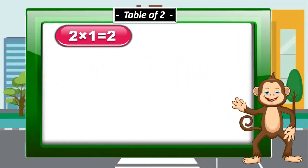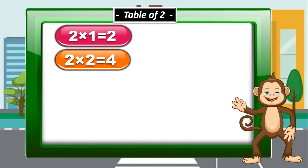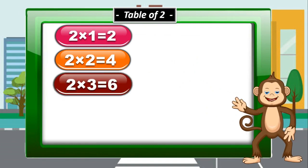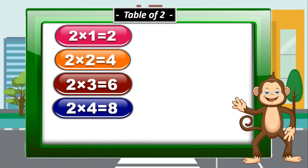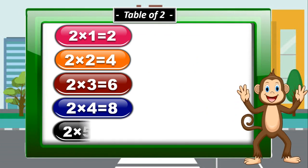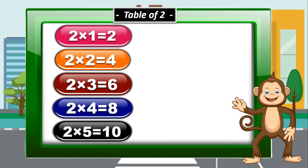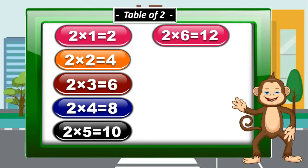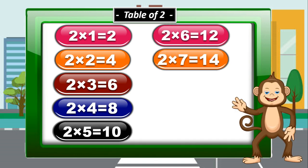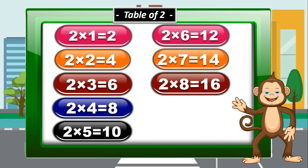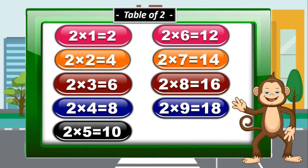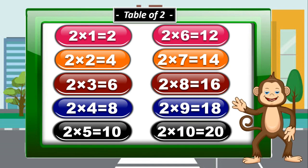2 times 1 is 2. 2 times 2 is 4. 2 times 3 is 6. 2 times 4 is 8. 2 times 5 is 10. 2 times 6 is 12. 2 times 7 is 14. 2 times 8 is 16. 2 times 9 is 18. 2 times 10 is 20.